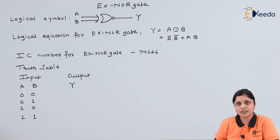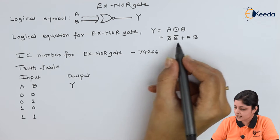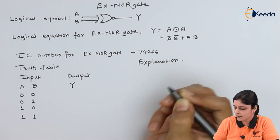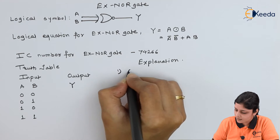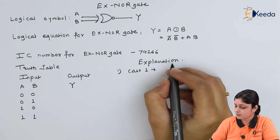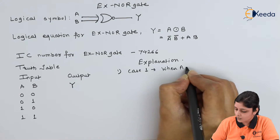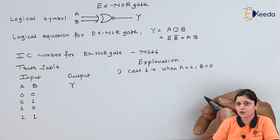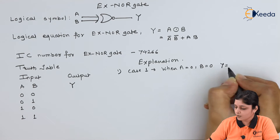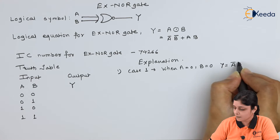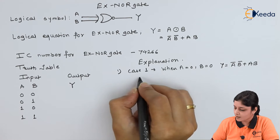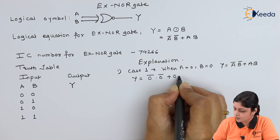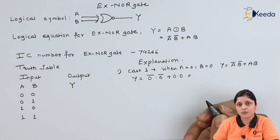Now we calculate the output side. For Case 1, when A equals 0 and B equals 0, we use the logical equation Ā·B̄ + A·B. Substituting: 0̄·0̄ + 0·0. We get 1·1 + 0·0, which equals 1 + 0, so Y equals 1.